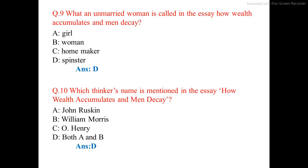Question number 9. What is an unmarried woman called in the essay How Wealth Accumulates and Men Decay? The correct option is option D: spinster.